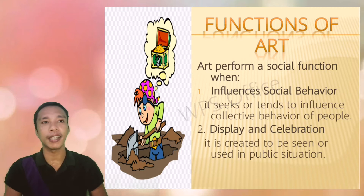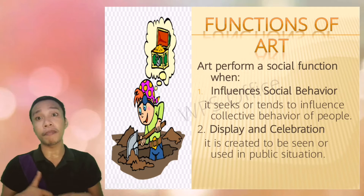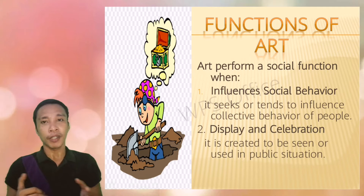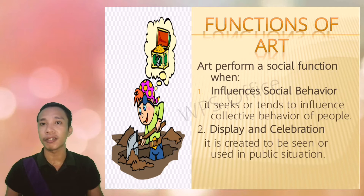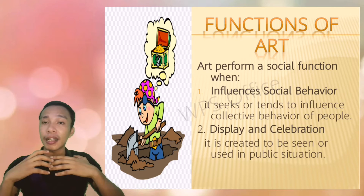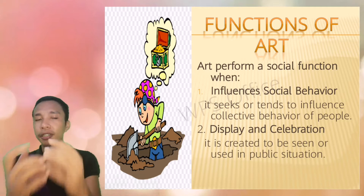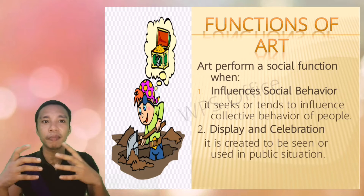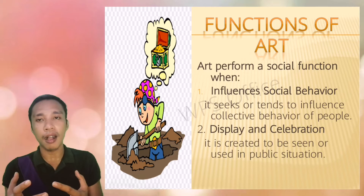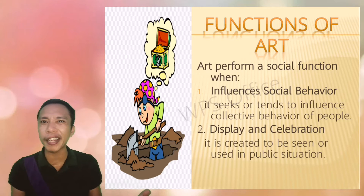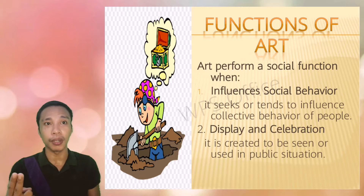Art performs a social function when it influences social behavior — it seeks to influence the collective behavior of people. One example is flash mobs. A flash mob is a dance performed by a lot of people in a certain place. By doing flash mobs, people are engaged and curious about what's happening. The people watching have no idea what's going to happen, so it affects their behavior — making them curious, surprised, and amazed.